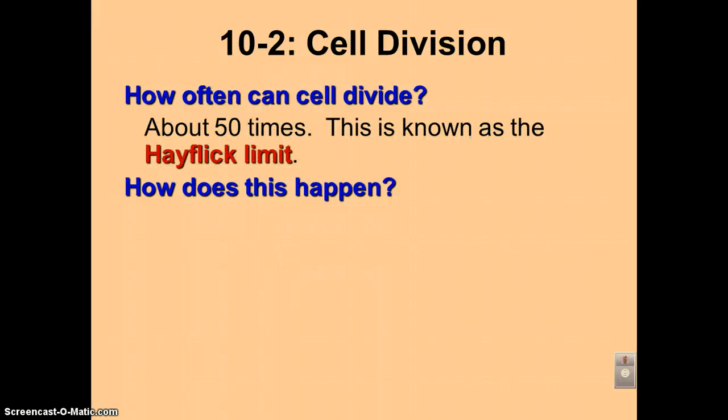So how often can a cell divide? Approximately 50 times, and this is known as the Hayflick Limit, obviously named after the scientist who discovered this one.